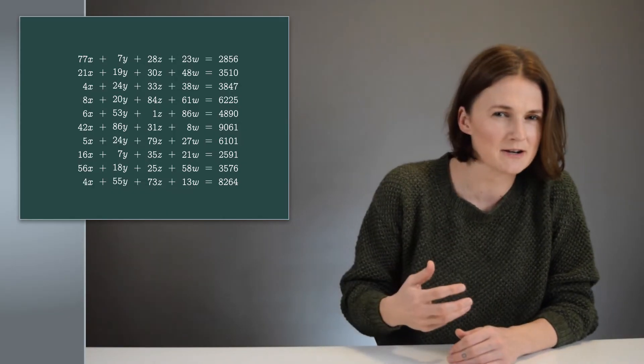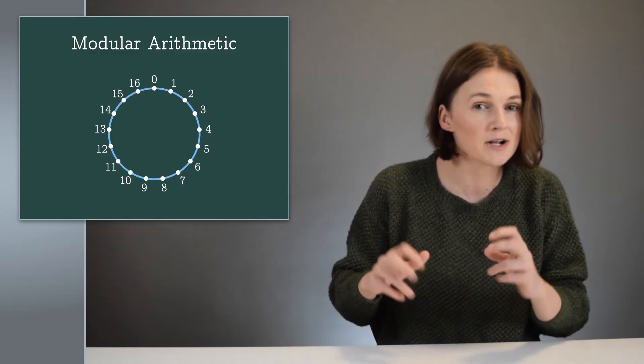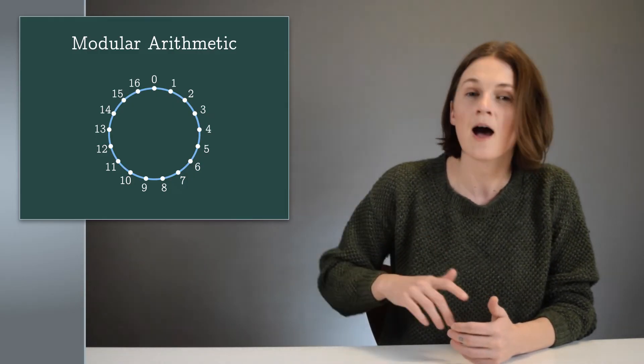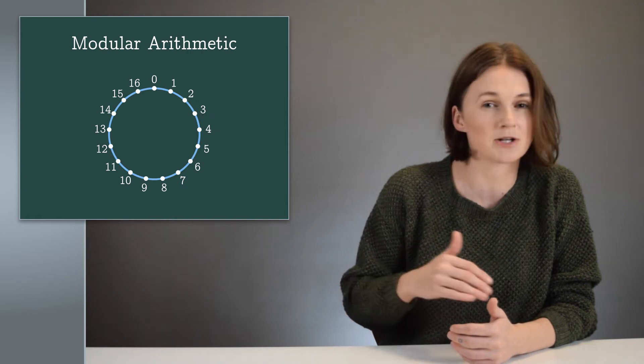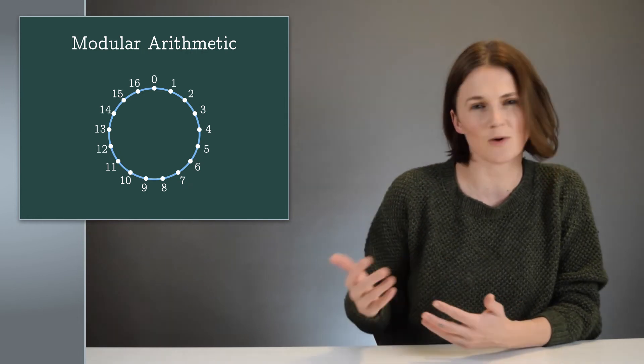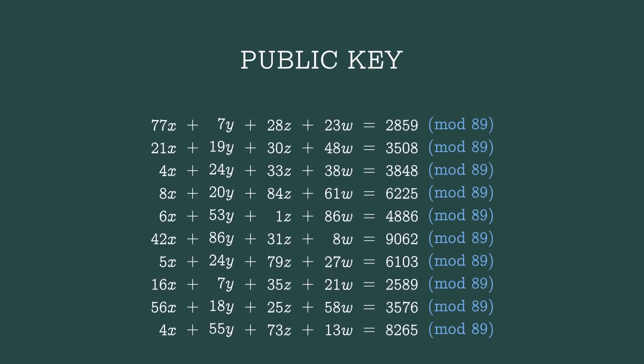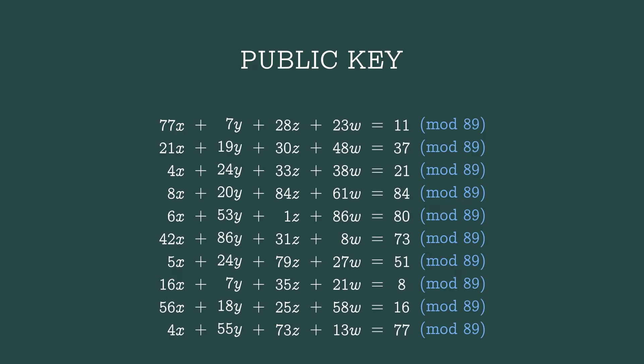There's one more layer to this problem. The whole thing happens mod a large number. That means we count in a circle, like a clock. I'm not going to explain the details of modular arithmetic here, it's quite common in cryptography. There are some links in the description to great primers. We'll do everything mod 89, which transforms our equations like this.